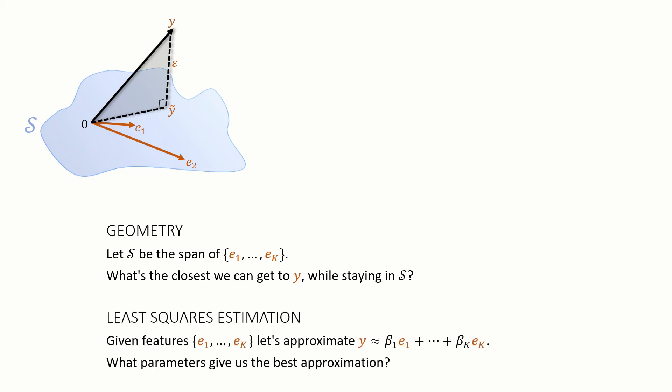Now let's set that aside and talk a bit about least squares estimation for linear models. Remember the idea is we have a set of features and we're looking at a linear model where the features are weighted by parameters that we want to estimate and we want to find the parameters that give the best approximation.